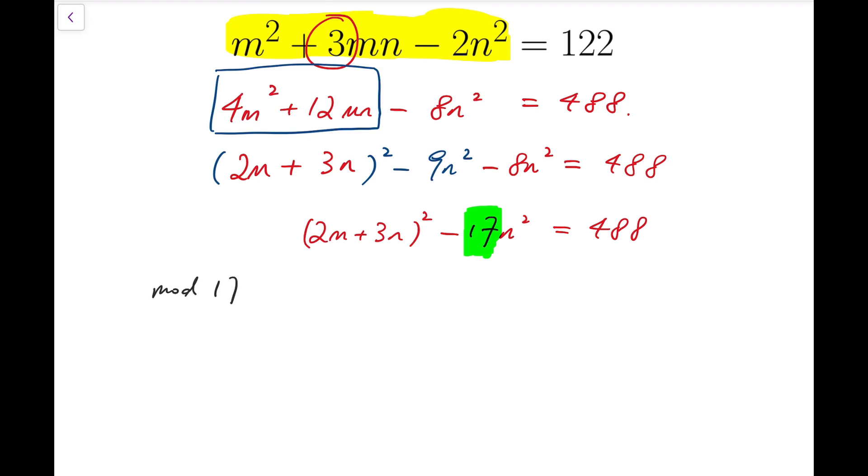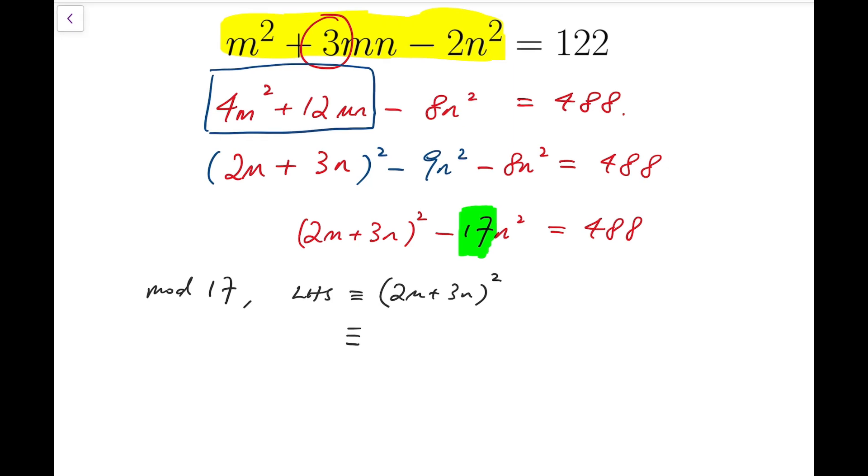However, if I take mod 17 on both sides, then left-hand side will be congruent to 2m plus 3n all squared, and that means it's a perfect square. So when I take mod 17, the only possibilities are 0 squared, which is 0, 1 squared, which is 1, 2 squared, which is 4.